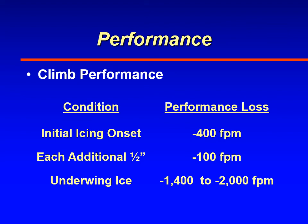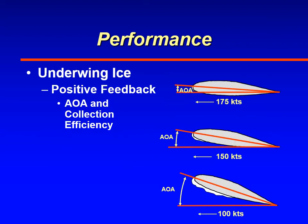They found that with underwing ice, you can lose climb performance of between 1,400 and 2,000 feet per minute. That is the biggest change in climb performance and the biggest problem with icing — a positive feedback mechanism where the aircraft eventually cannot maintain altitude and will lose altitude as it picks up ice under the wing. These are the performance concerns that pilots have when flying in icing conditions. In future videos, we'll talk about other hazards such as stall characteristics and visibility.